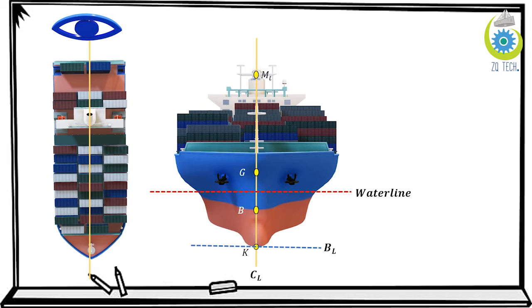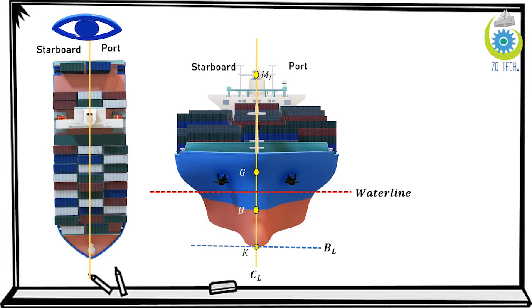These lines are basically planes if you look at them in 3D. CL, the yellow line, is the centerline, and in 3D it is the central plane. Looking at the top view, you can see the port and starboard sides. In naval architecture, the convention is to look at the ship from the stern. When you are looking from the stern, the right side is the starboard side and the left side is the port side — that is the convention used by naval architects.